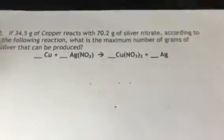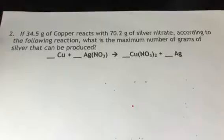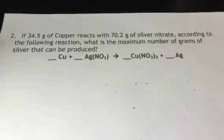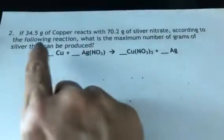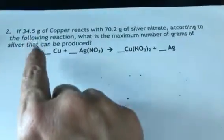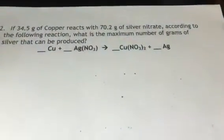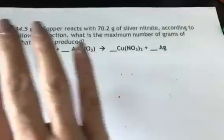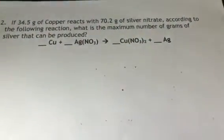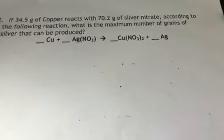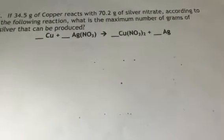Alright, let's look at another example of a calculation. We are given copper to react with silver nitrate. They tell us how much copper we have and how much silver nitrate we have. To do this calculation, I need to have a balanced chemical equation, so I need to go and count my particles.